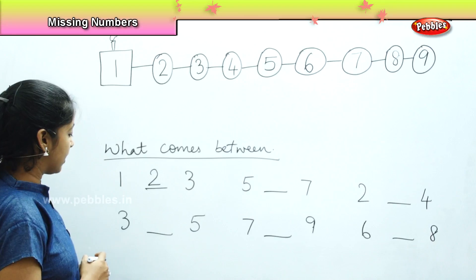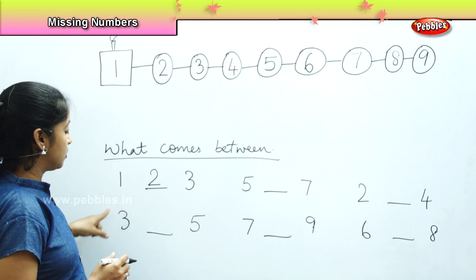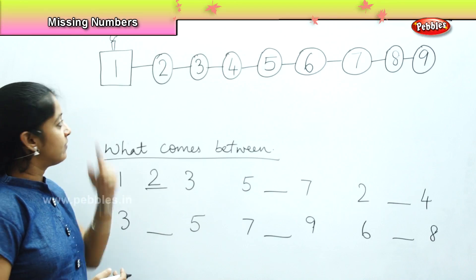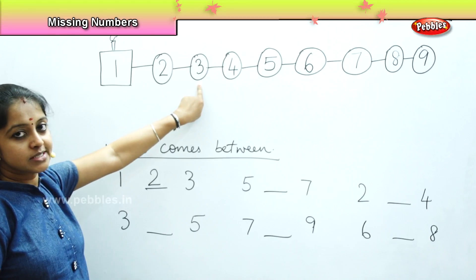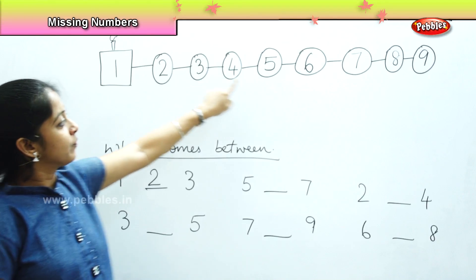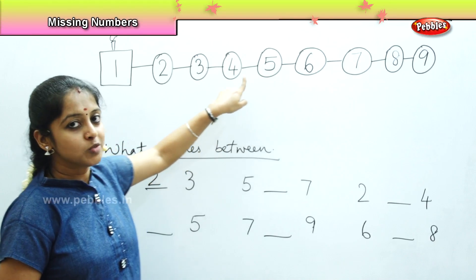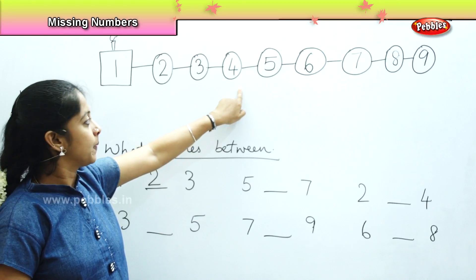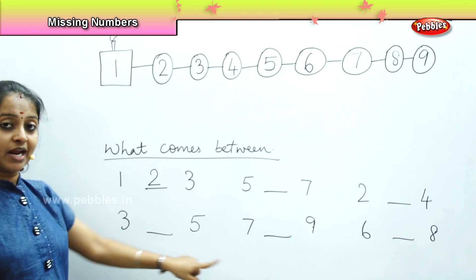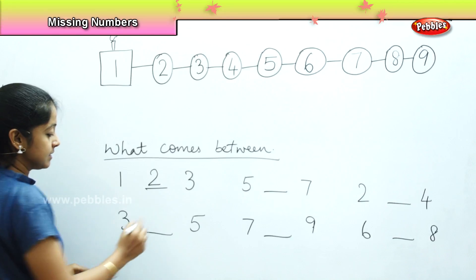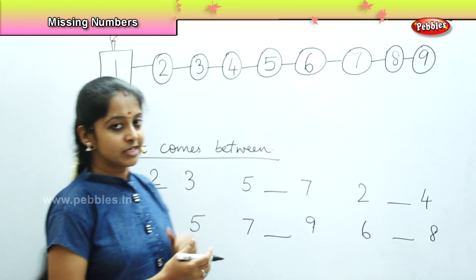Now I have to find out a number which will come in between 3 and 5. Shall we see our engine again? Where is number 3? The bogey number 3 is here. And where is bogey number 5? It is over here. So between bogey number 3 and 5, which bogey is missing? It is number 4. So what will come between 3 and 5? It is number 4.